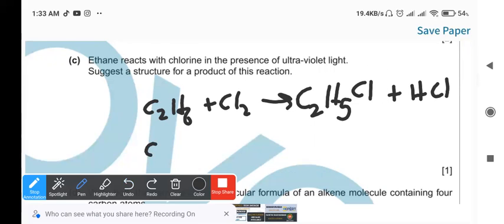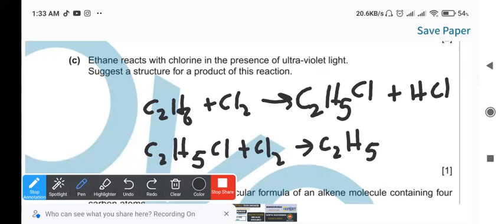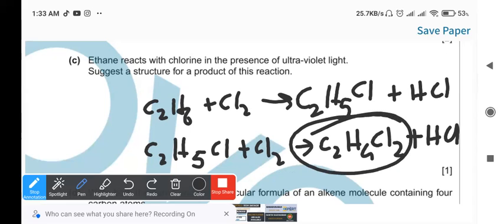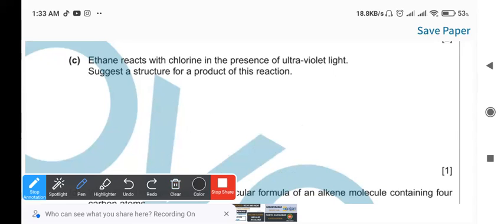Then C2H5Cl plus Cl2 - again one hydrogen atom will get displaced producing C2H4Cl2 and giving one HCl. You can also draw the structure of this compound. This compound that I've circled - I prefer to draw the structure of the first compound, so it's like this.